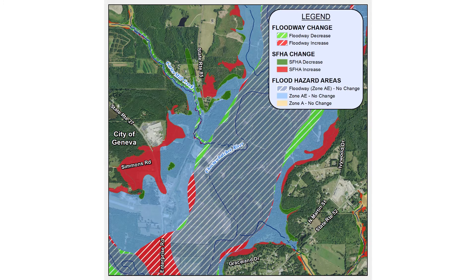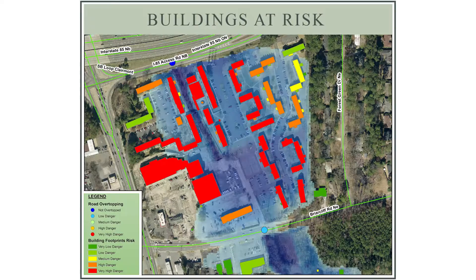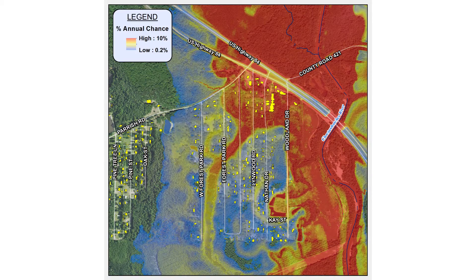I'm Jared Matley, a project manager at Dewberry's Atlanta office, and I'm here to talk about FEMA's Risk Map products. FEMA's Risk Map products are a set of tools for communities to look beyond whether a property is in or out of a high hazard flood zone. These data sets can help community officials see the severity of flood risks throughout the community.